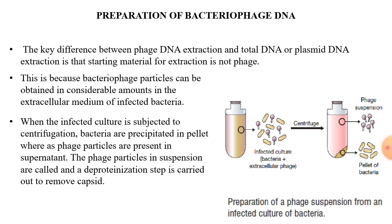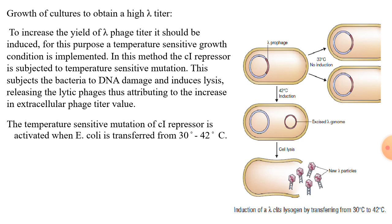To obtain purified DNA of bacteriophage in high amounts, we know that lambda phage exhibits two modes of cycle: lysogeny and the lytic cycle. Here we do not require the lysogenic mode — we need to induce the lytic cycle, thus increasing the yield of lambda phage titer. A temperature-sensitive growth condition is designed for this purpose. The C1 repressor is the protein responsible for bacteria entering the lysogenic mode of life cycle.